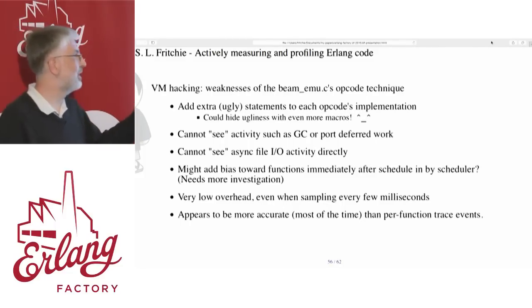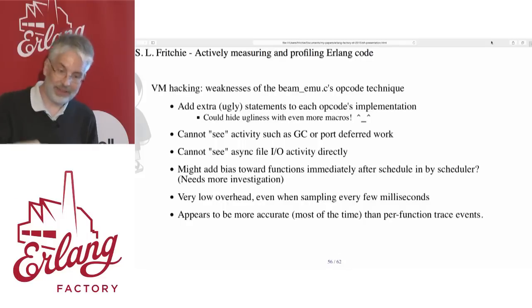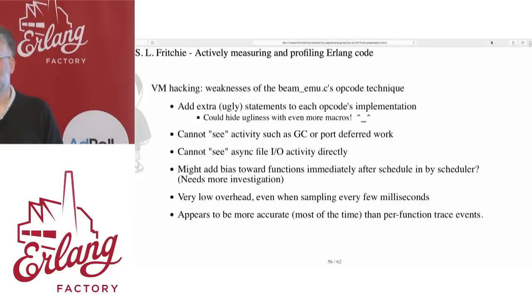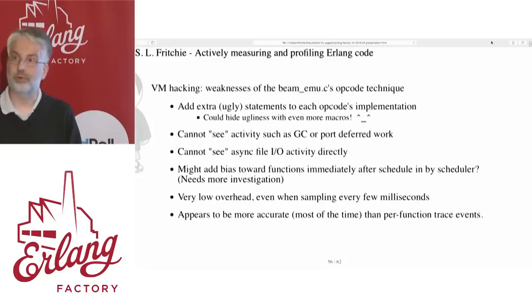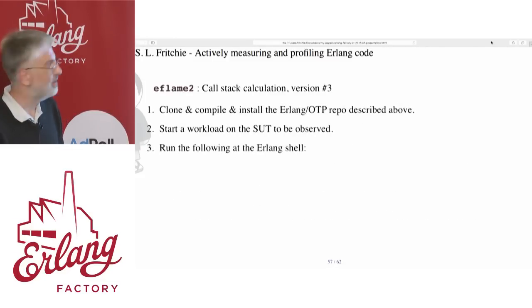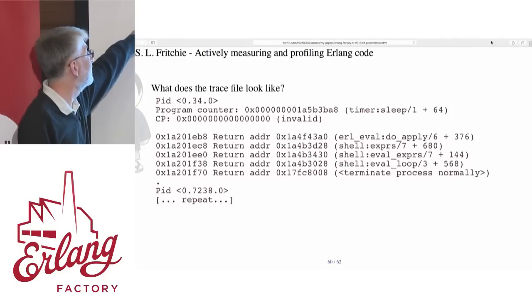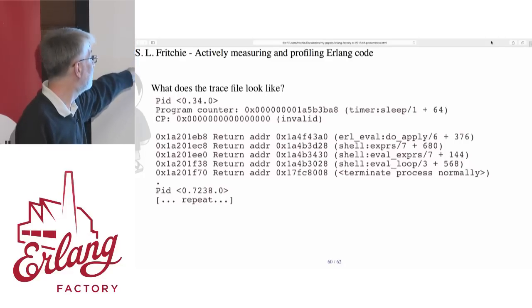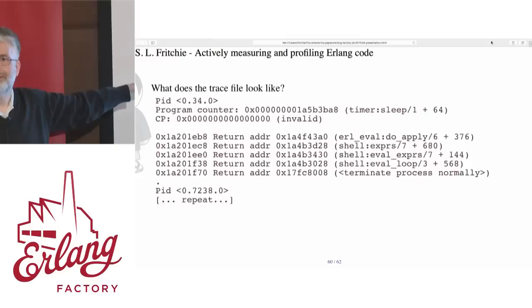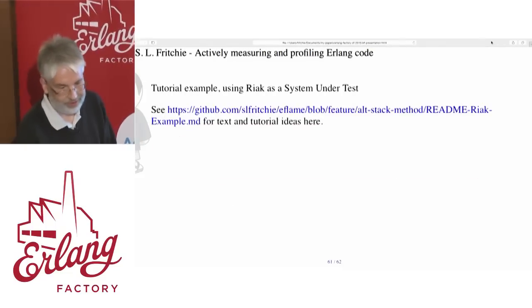It might have some bias in favor of functions that are immediately scheduled in by the scheduler right after the flag is set — maybe, I don't know. It does have very little overhead. On my laptop, instead of 50 to 300 times slowdown on Riak, I see something like two or three percent, even sampling every seven milliseconds or every three milliseconds. It's more accurate a lot of the time but not all the time — that's ongoing work. These new trace files contain the PID, program counter, continuation pointer, and additional stack trace data.